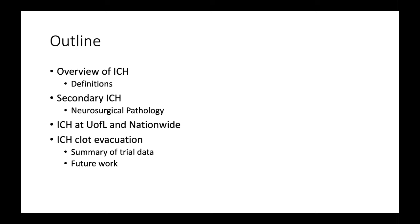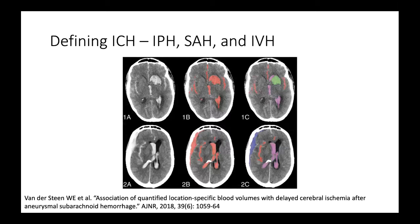Here's an outline of the talk: I'll start with an overview of intracerebral hemorrhage and various definitions and categorizations. I'll spend a little bit more extra time on secondary ICH, which is what we see on the neurosurgical side more commonly than the primary - though potentially not for long. Then I'll look at some data we have for University of Louisville compared to nationwide ICH. And finally, I'll end with a focused discussion on ICH clot evacuation, the data supporting it, and where we're at.